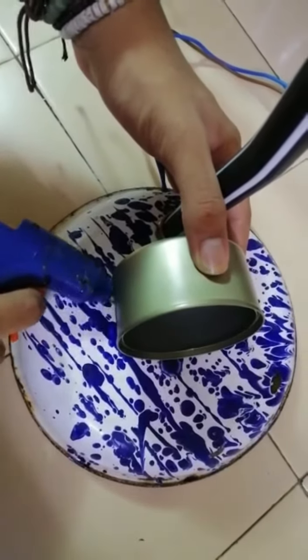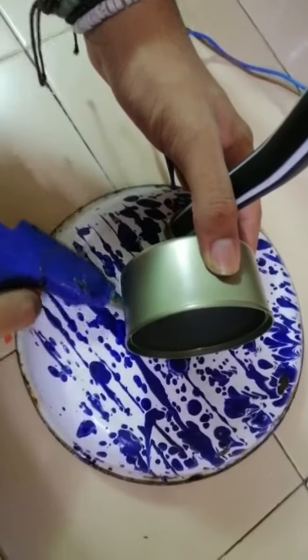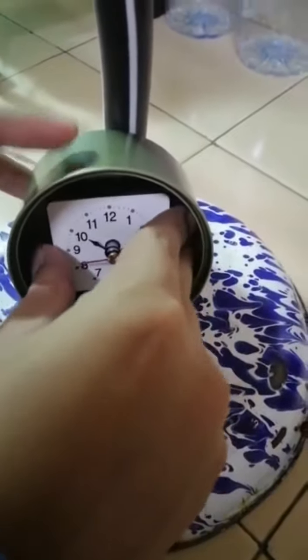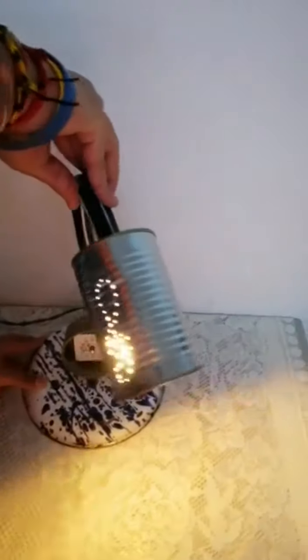I glue the mechanism to hold the can in which I will display my clock. I now place the clock inside the can.